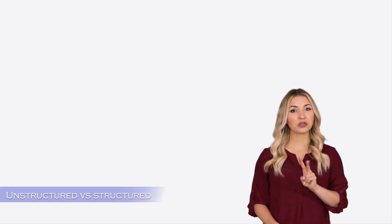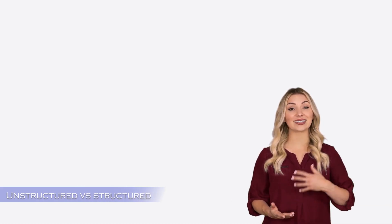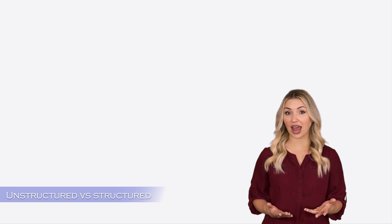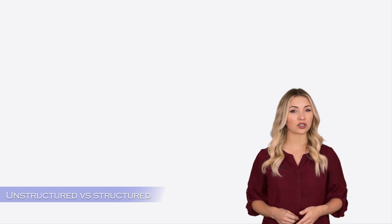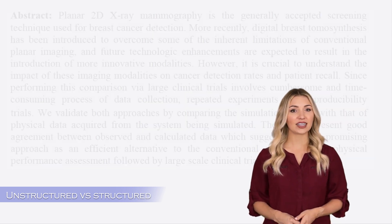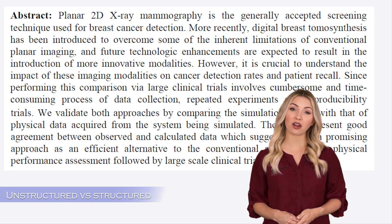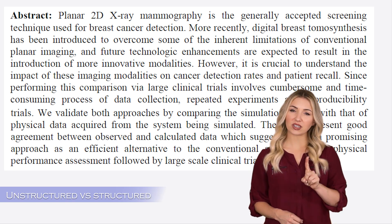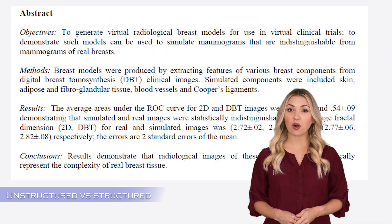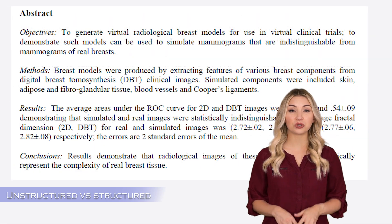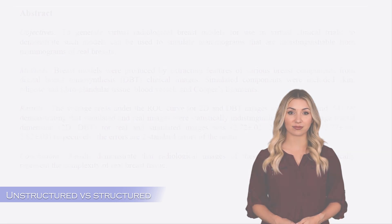There are two types of abstracts: structured abstract and unstructured abstract. Most journals follow the unstructured format, which is basically writing your abstract as a continuous paragraph. However, some journals follow a structured format where you are expected to structure your abstract under different headings.